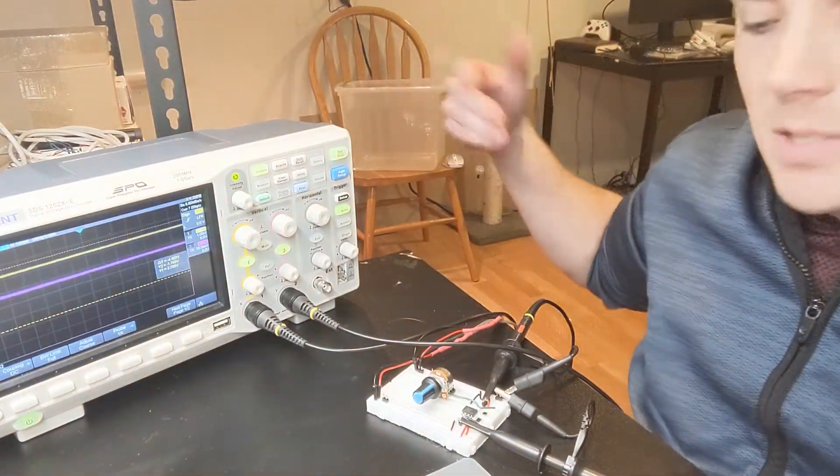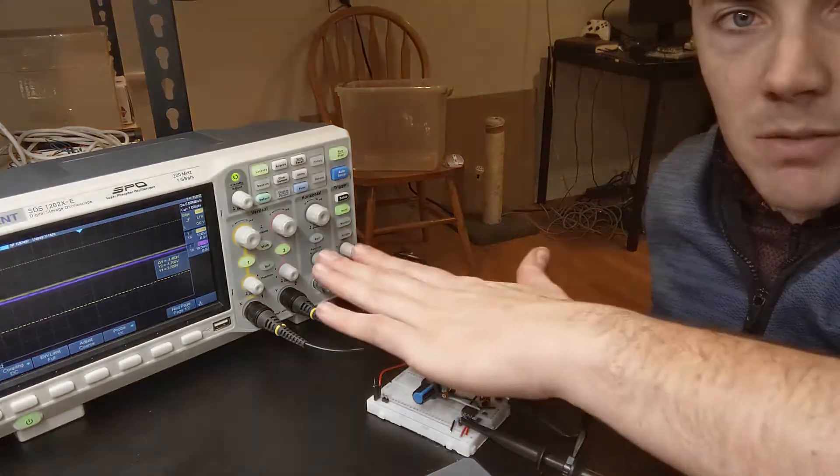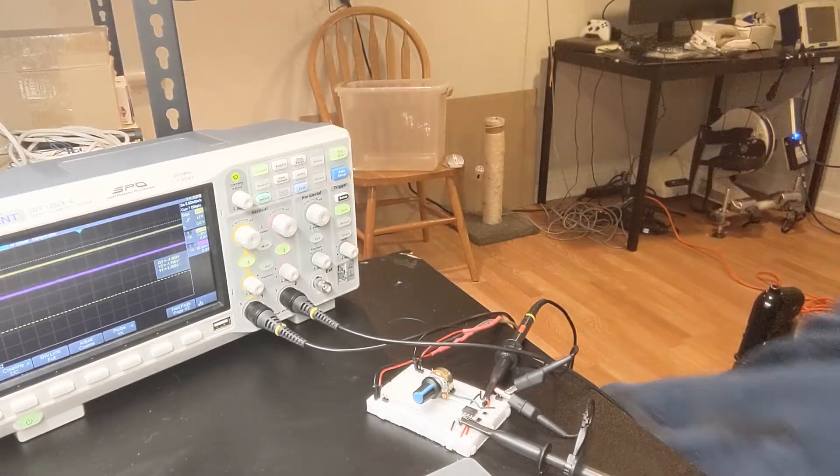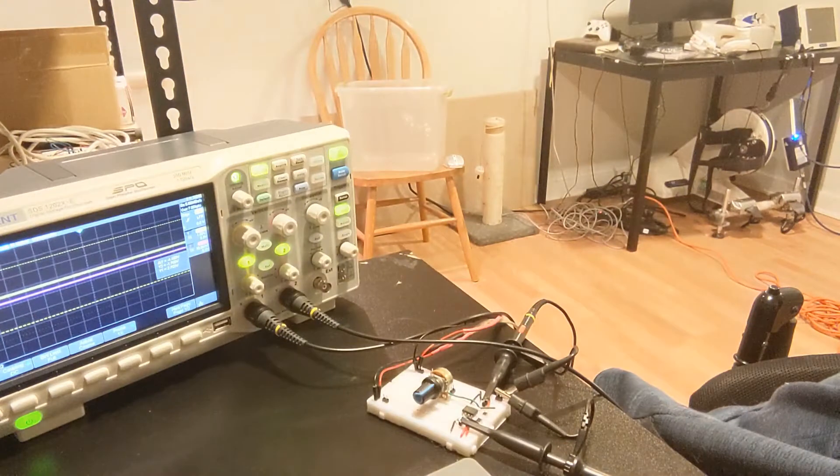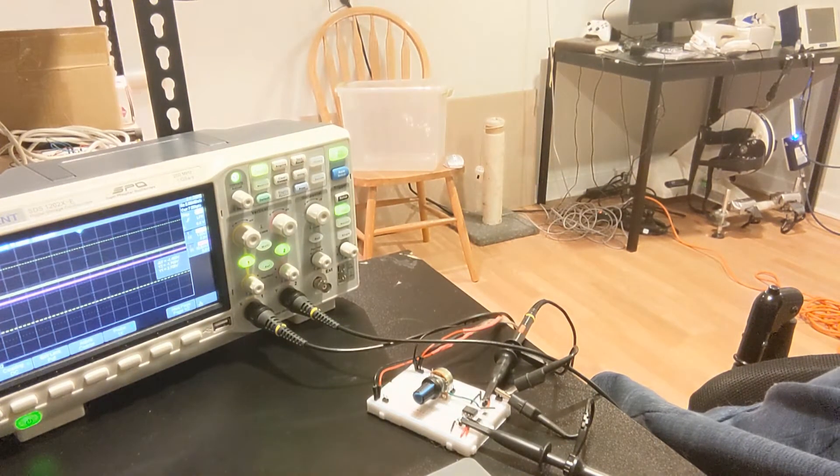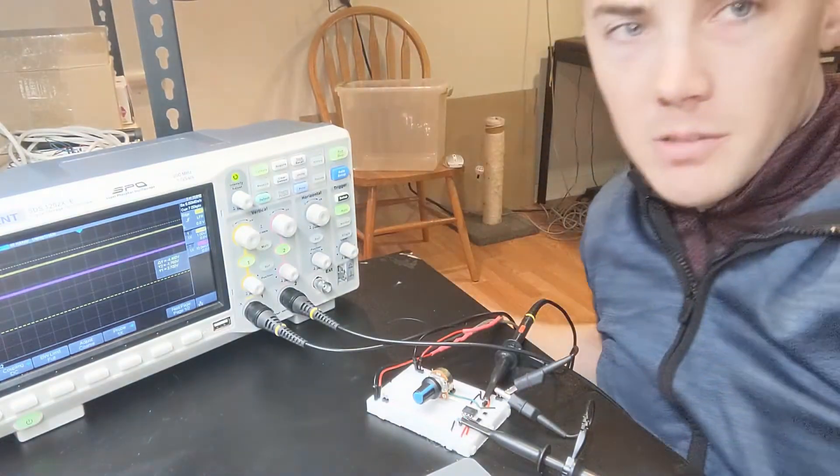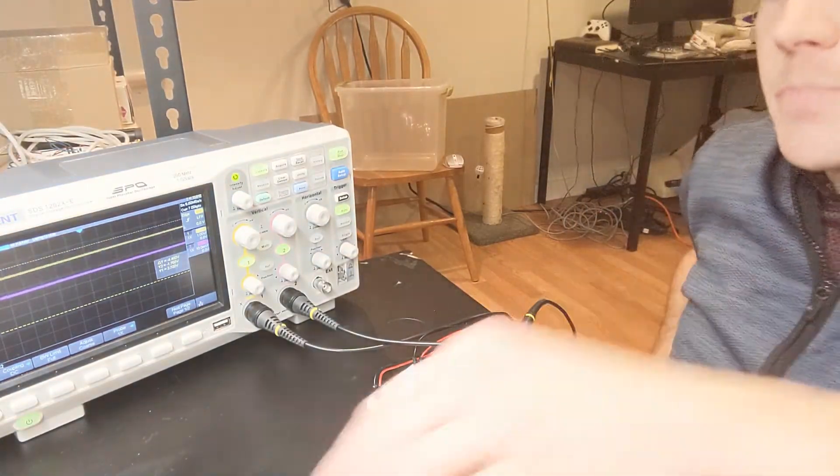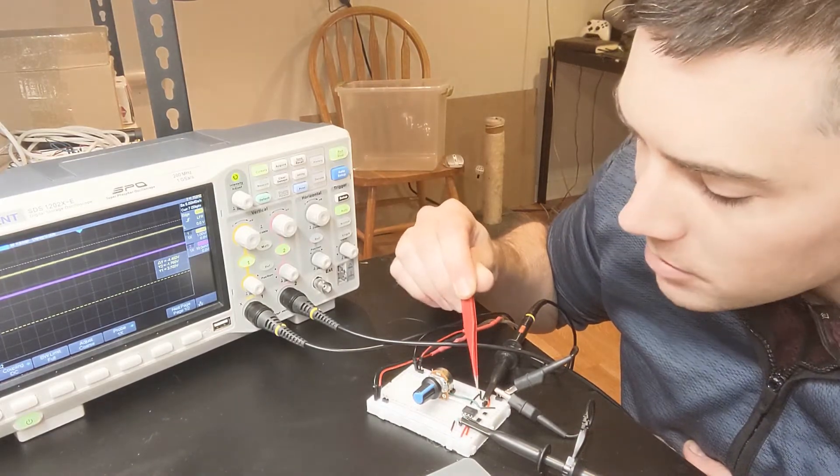And to prove that this is light, I mean you might have already noticed, but I just cover it up a little bit, it goes away. And if I turn the workbench light off, it goes away. The channel one trace is still there because there's some room lights in the background still, not just my workbench light. But yeah, these are silicon photodiodes.